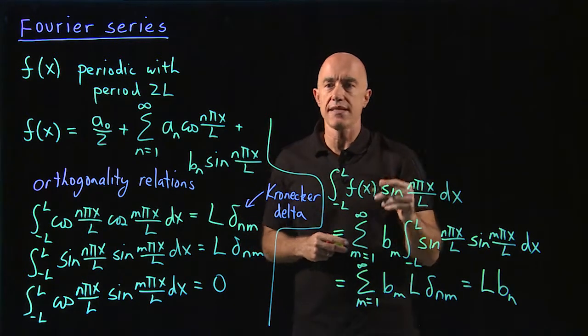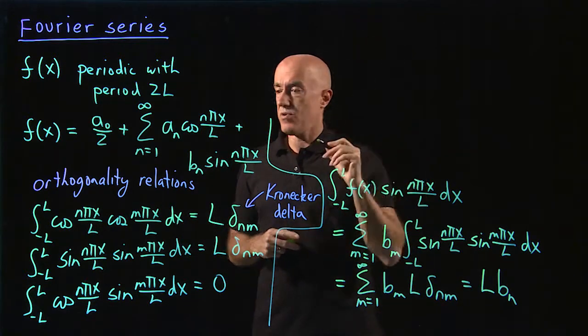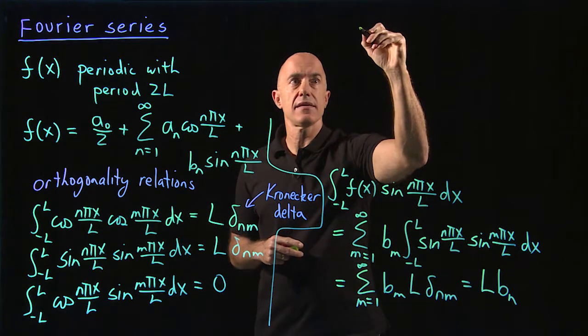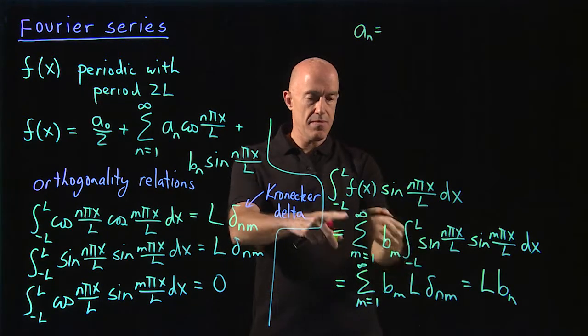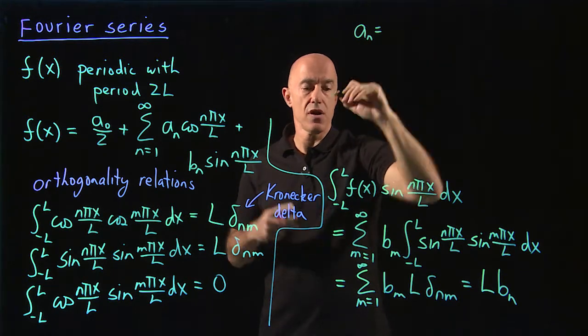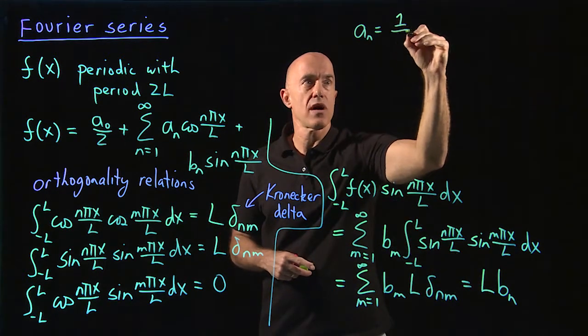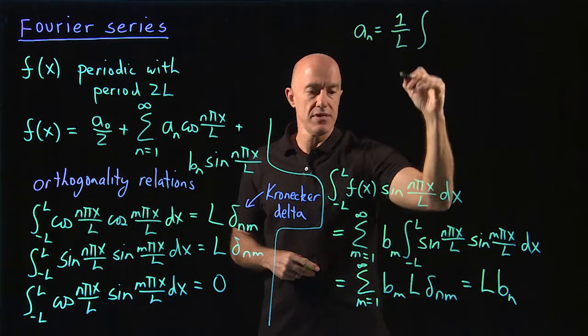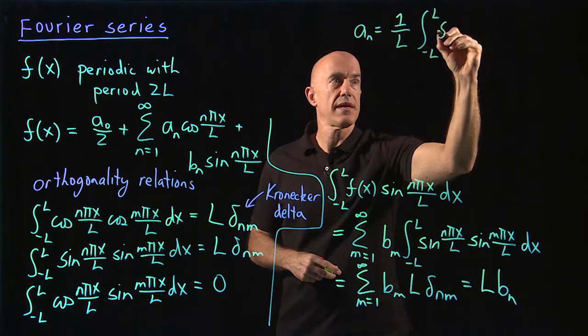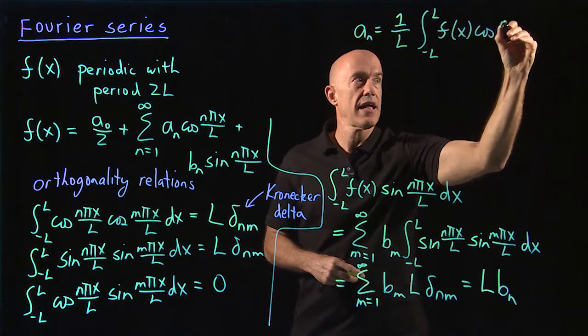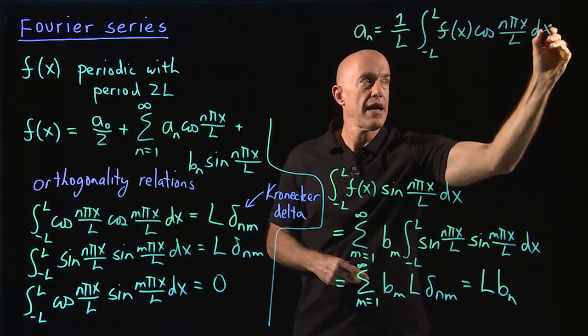I should just write down what the expressions are. So we have a sub n then is given by the integral, or you have to divide through by l. So it's given by 1 over l times the integral from minus l to l of f of x times cosine n pi x over l dx.